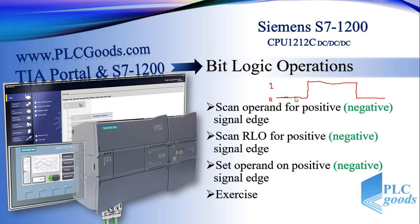For these instructions, the state of an address does not matter — either it is 0 or 1 — but these instructions are used to query a 0 to 1 change in the signal state, or a 1 to 0 change.